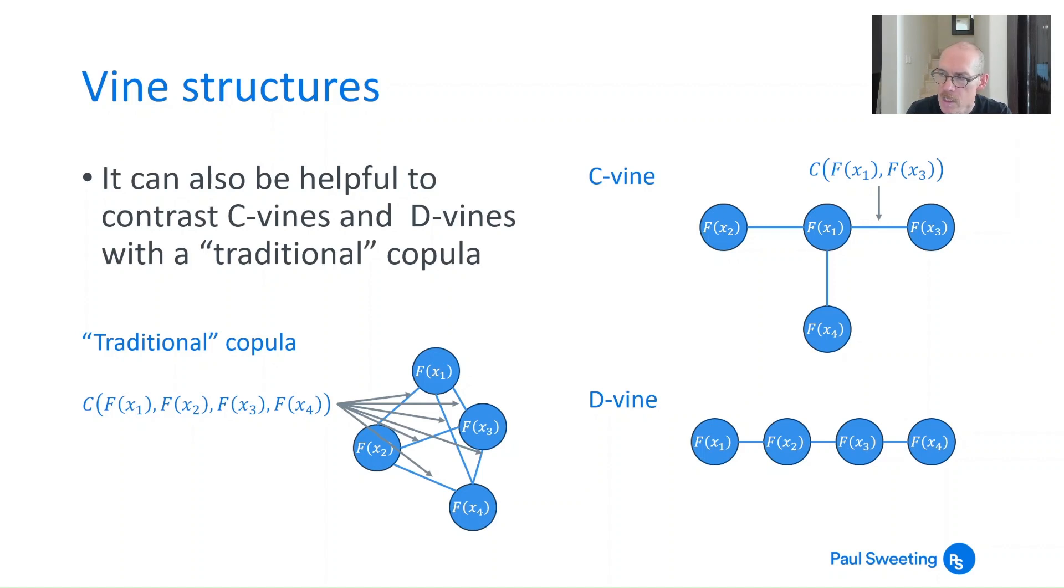Now as we'll see later on you do have to sometimes allow for links between say 2 and 4 and 3 and 4 with the C-vine when you're looking at the likelihood because the structure implies some sort of relationship. But in terms of what you're explicitly setting out when you're building the shape of your copula, a C-vine has one thing at the center and everything joined to it, a D-vine is a line. Traditional copula, all of those relationships between all the variables are explicitly defined at the outset.